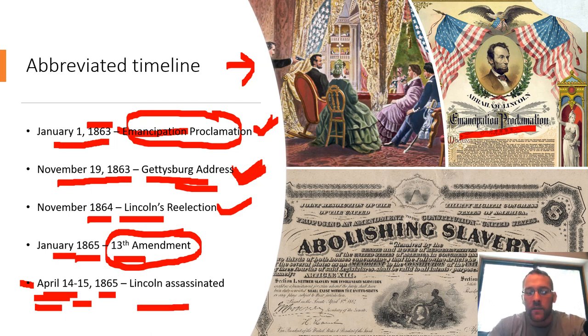Lincoln dies a little after 7 a.m. the next morning on April 15th. That's why there are two different dates for his assassination — he was shot on the night of the 14th and officially died on the 15th.